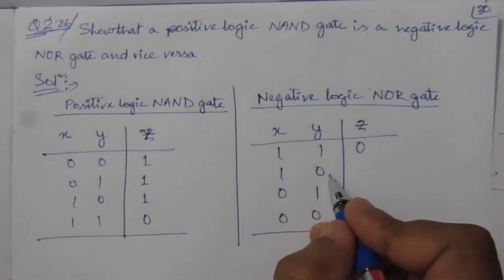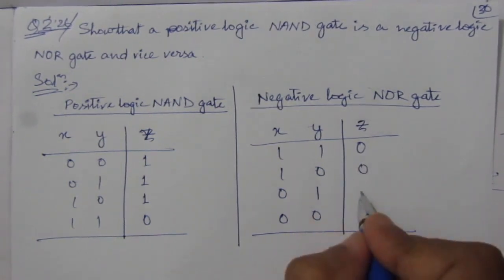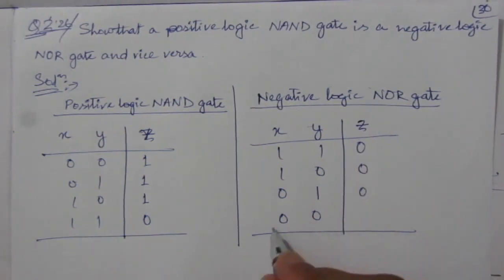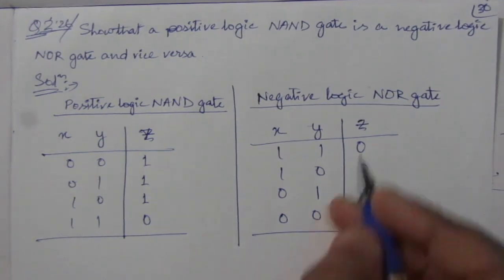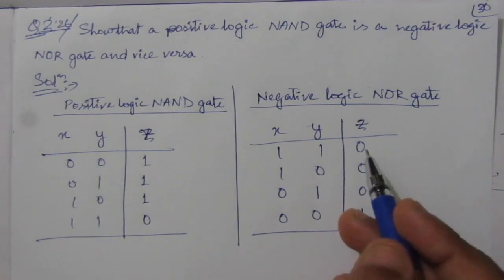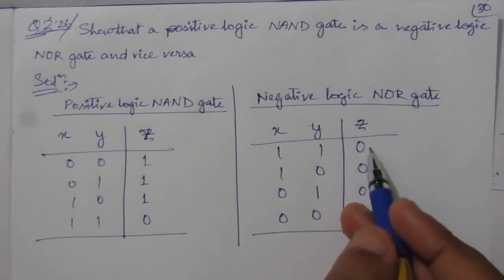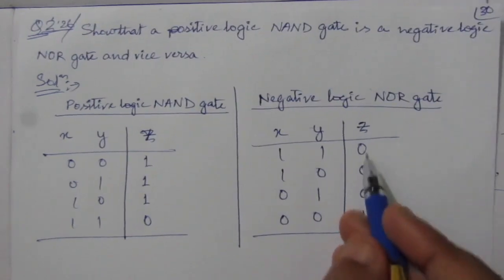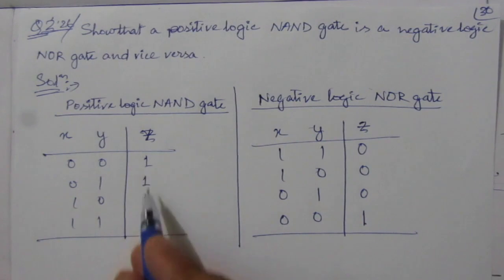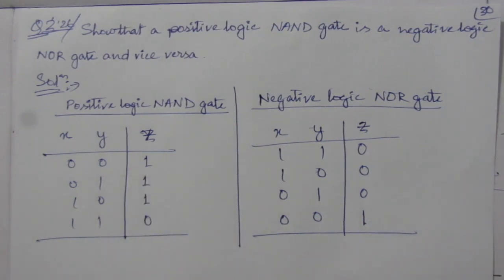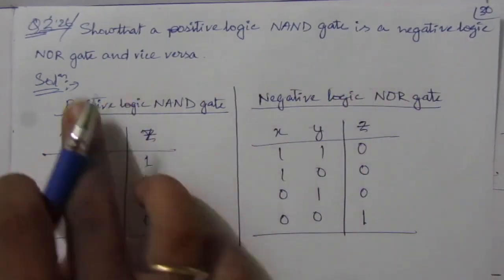Similarly, 1 OR 0 gives OR gate output 1, so the NOR gate output will be 0. And similarly it is 0. Finally, 0 OR 0 is 0, and after inversion we will get 1. Now comparing the two outputs: this is a negative logic output, so converting to positive logic it would become 1,1,1,0. Here also we have 1,1,1,0. So we can say that a positive logic NAND gate is nothing but a negative logic NOR gate.